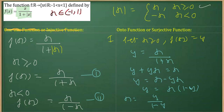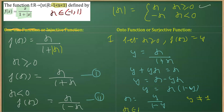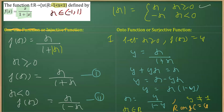For any real y other than 1 — that is, y belonging to the co-domain — we get x as a real number. Since y = 1 is not included in the co-domain, the range equals the co-domain, and therefore the function is onto for Case 1.